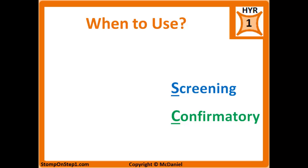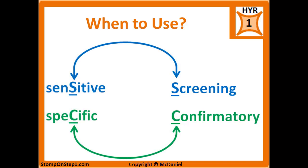An example of this is the HIV test: the ELISA test is the initial screening test, and everyone who gets a positive result then gets a confirmatory Western blot. A useful mnemonic is that the fourth letter in 'sensitivity' is 's' for screening, and the fourth letter in 'specificity' is 'c' for confirmatory.